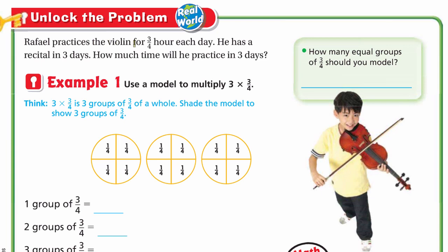Raphael practices the violin for three-quarters of an hour each day. He has a recital in three days. How much time will he practice in three days? 'Each' means multiplication, so we will multiply 3 by three-quarters. How many equal groups of three-quarters should you model? We have three days, each day three-quarters of an hour, so we will model three-quarters three times.